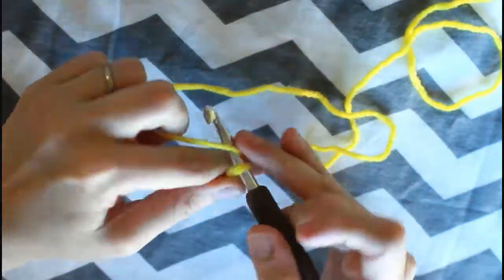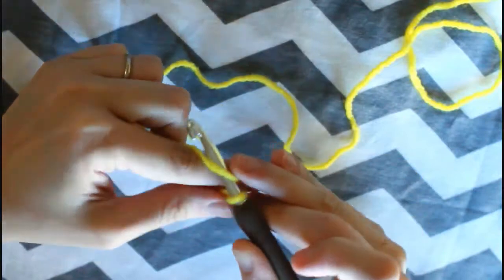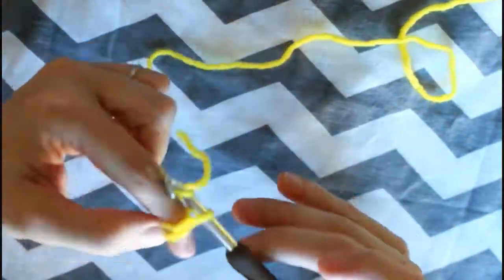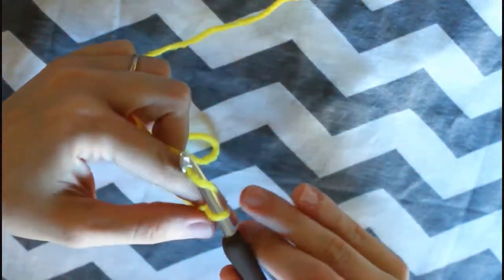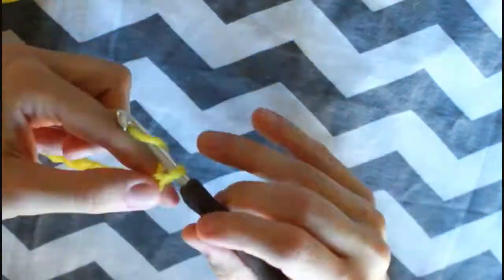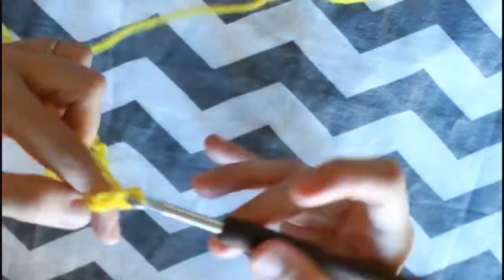And start by creating 60 foundation chains. If you need a reminder of how to do the foundation chain, I have a video where I explain it easier and slower. But if you've been crocheting for a while, you already know how to do it, so just go ahead and do 60 chain stitches.